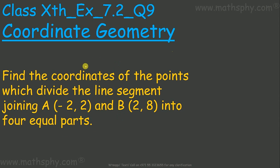This question says: find the coordinates of the points which divide the line segment joining A and B into 4 equal parts. These are the coordinates for A and these are the coordinates for B.